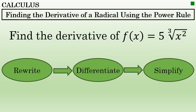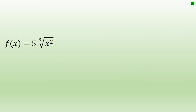Let's begin. So the first step in differentiating f of x equals 5 times the cube root of x squared is to rewrite the function so that x, instead of being inside of a radical sign, is the base of an exponent.